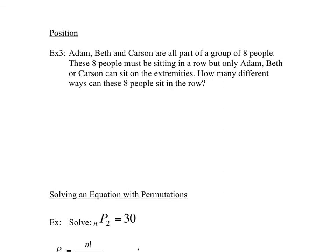Sometimes permutations have restrictions on position. For example, Adam, Beth, and Carson all are part of a group of eight people. We need to sit these eight people in a row, but only Adam, Beth, and Carson can sit on the two ends. How many different ways can the eight people sit in a row? There's the beginning spot, six spots in the middle, and then spots at the end. These two end spots can only be sat in by Adam, Beth, or Carson.